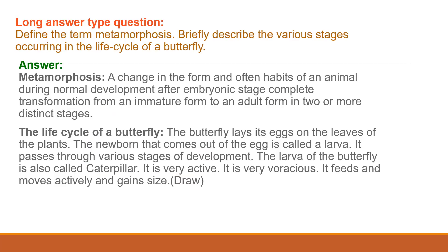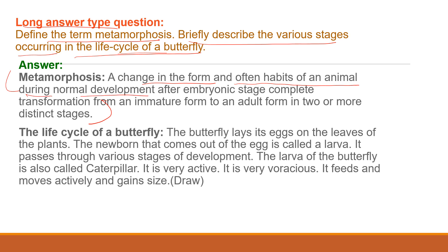The first long answer type question is: define the term metamorphosis. A change in the form and often the habits of an animal during normal development after the embryonic stage — a complete transformation from an immature form to an adult form in two or more distinct stages — is called metamorphosis.